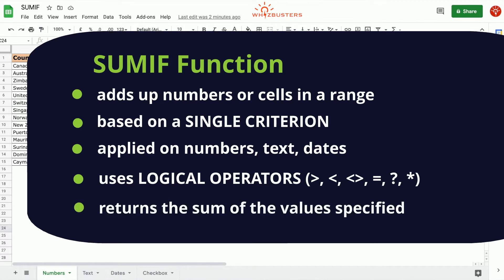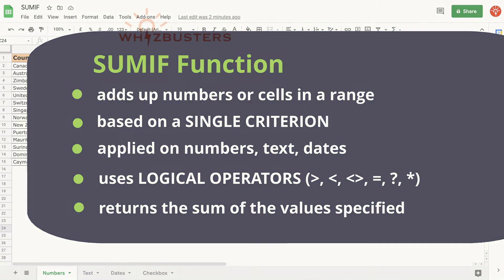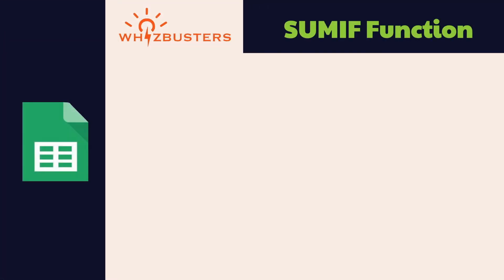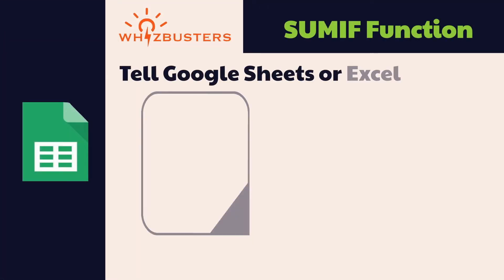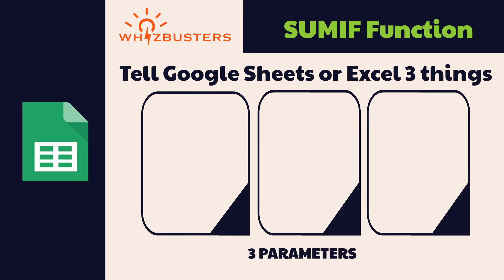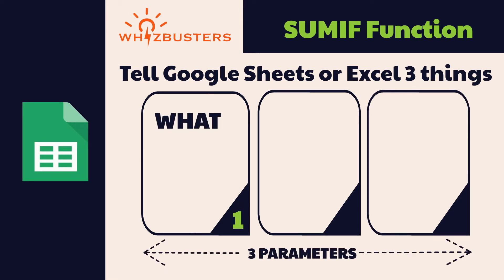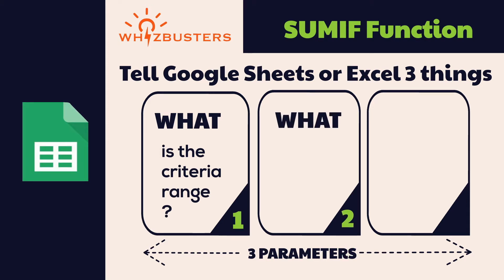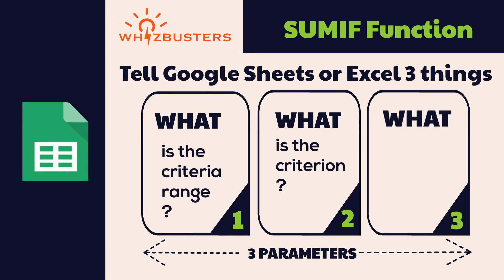The SUMIF function returns the sum of the values specified — that is, the number which is the result from calculating the sum of the cells based on the criterion. To use this function, we need to tell Google Sheets or Excel three things: one, the criteria range — the range which is tested against the criterion; two, the criterion such as less than or greater than; and three, the sum range, which is the range we need to sum up the totals for.